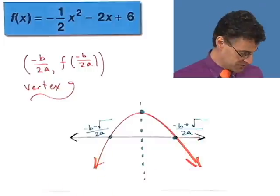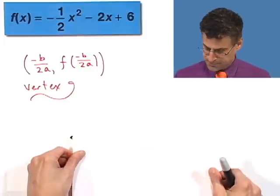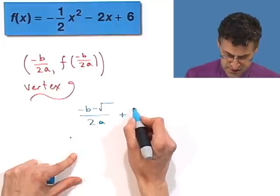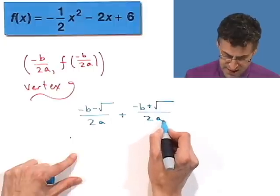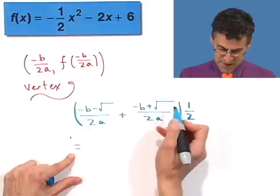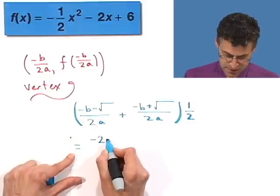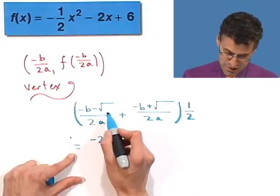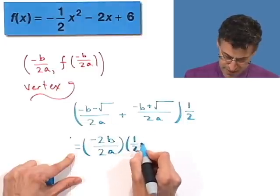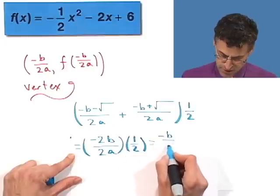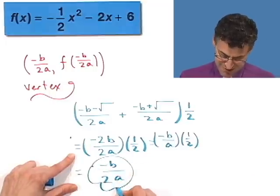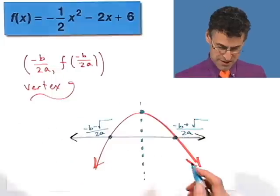I want to find the average, so I take those two and add them. I take negative b minus the square root of stuff all over 2a, and add to it negative b plus the square root of stuff all over 2a, then multiply by one-half. I have a common denominator, so I add the tops: negative b plus negative b is negative 2b. And negative square root of junk plus square root of junk — they add to give zero. So I'm left with negative 2b over 2a times one-half. The twos cancel, leaving negative b over 2a.